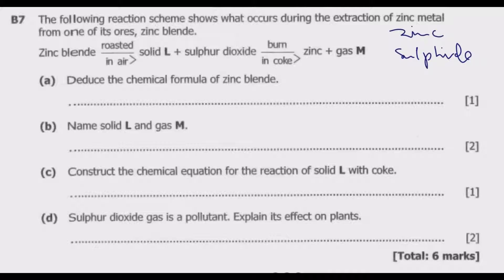When we roast or burn or heat strongly zinc blende or zinc sulfide in the presence of air, we get this equation: zinc sulfide plus oxygen gives us zinc oxide plus sulfur dioxide. Sulfur dioxide is a gas, zinc oxide is a solid, oxygen is a gas, and zinc sulfide is solid. This zinc sulfide is what is known as zinc blende.